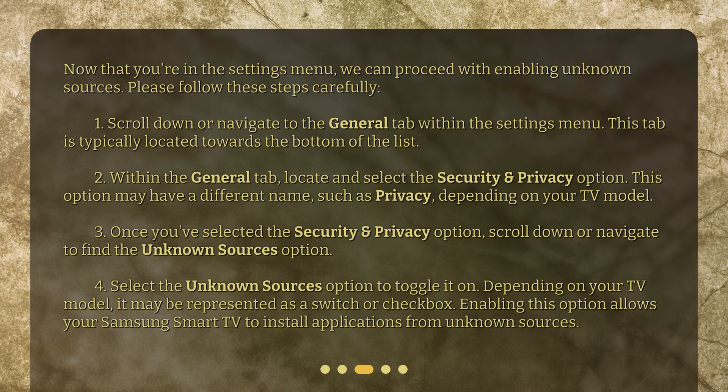Within the General tab, locate and select the Security and Privacy option. This option may have a different name, such as Privacy, depending on your TV model. Once you've selected the Security and Privacy option, scroll down or navigate to find the Unknown Sources option. Select the Unknown Sources option to toggle it on. Depending on your TV model, it may be represented as a switch or checkbox. Enabling this option allows your Samsung Smart TV to install applications from unknown sources.